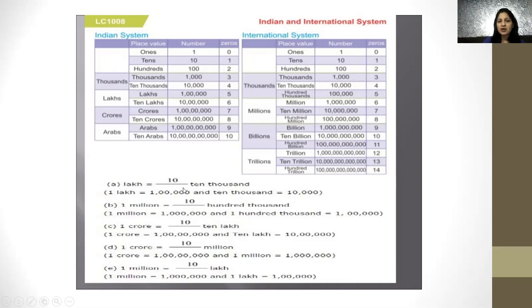1 lakh is equal to 10 thousands. A lakh has 5 zeros and 10,000 has 4 zeros — so 5 minus 4 leaves 1, meaning 1 lakh equals 10 thousand. For 1 million: a million has 6 zeros and 1,00,000 has 5 zeros — so 6 minus 5 leaves 1, meaning 10 is the multiplier. Therefore 1 million is equal to 10 lakh.